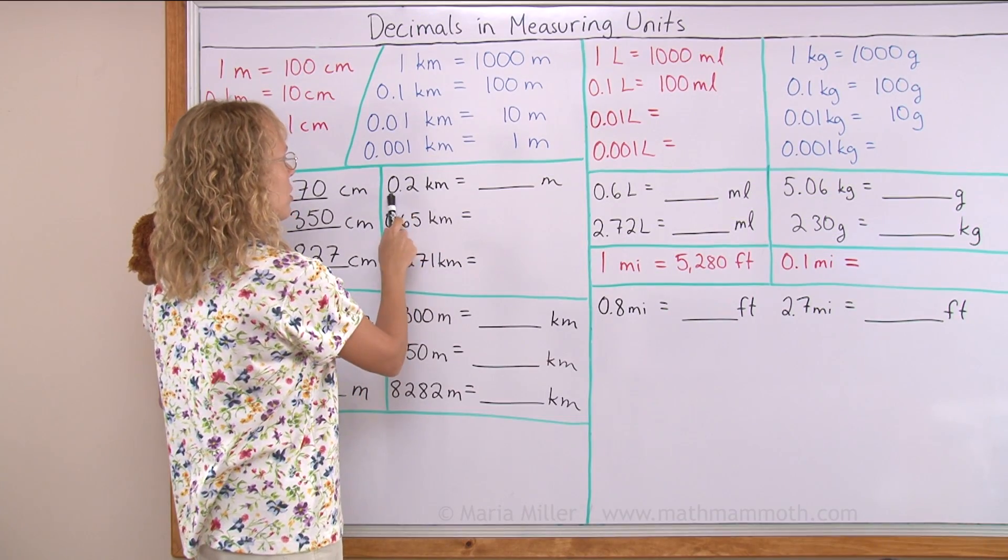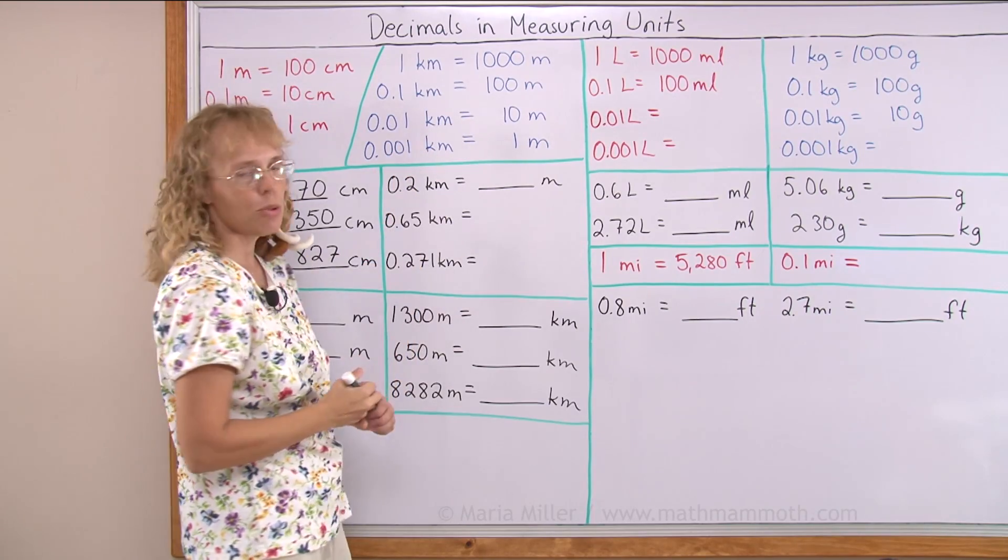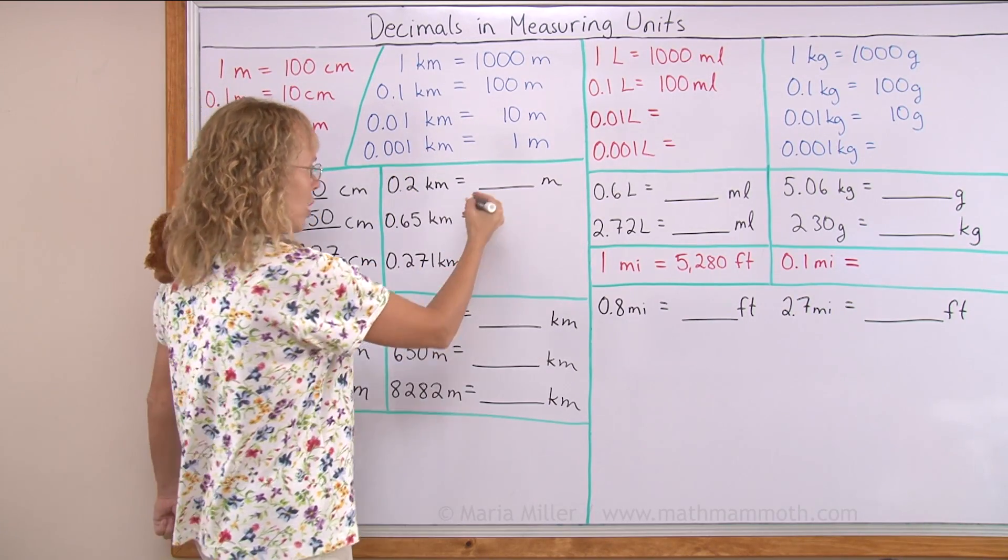On this side, two tenths of a kilometer. If one tenth of a kilometer is 100 meters, then two tenths of a kilometer is 200 meters.